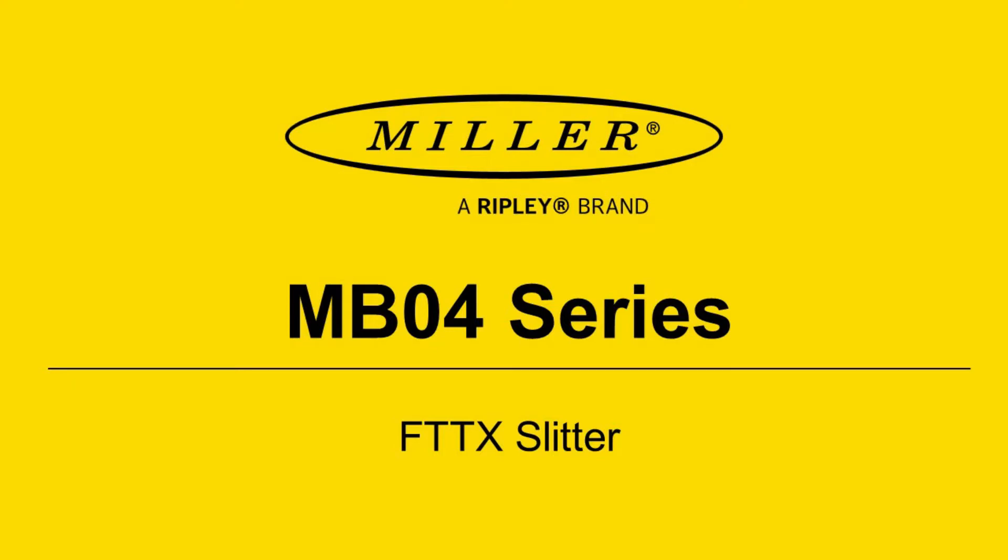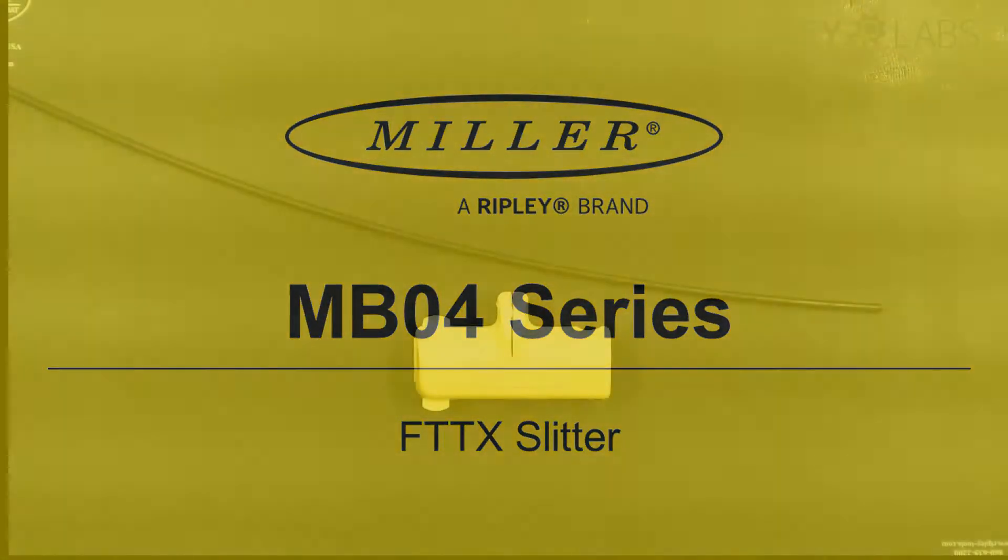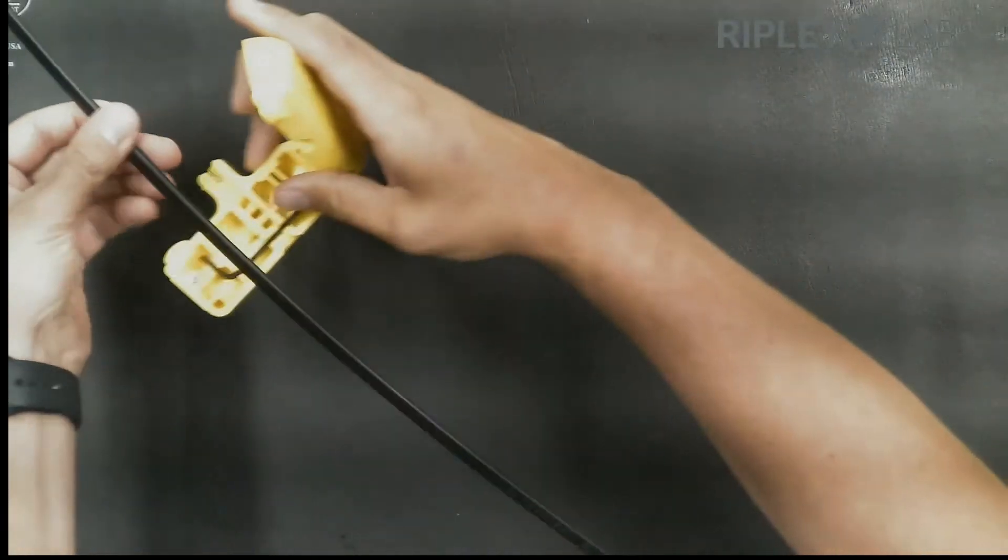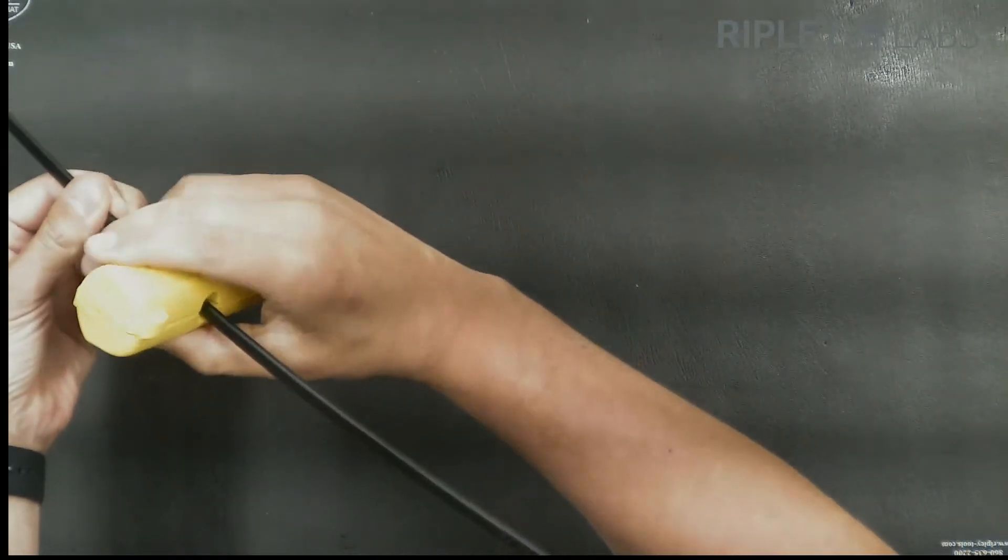Coming to you from Ripley Tools, in this video we will go over the MBO4 series FTTX slitter tools. The MBO4-7000 is designed to quickly and easily strip the jacket from flat drop cables.